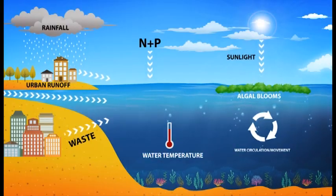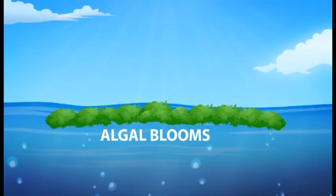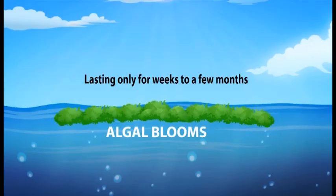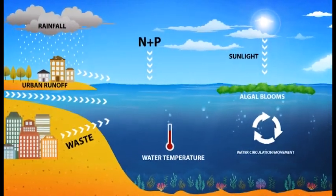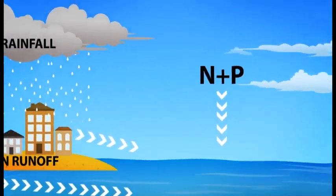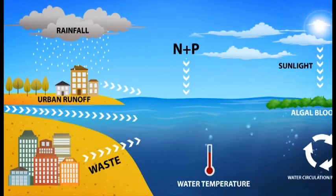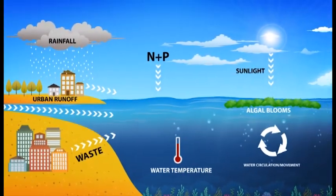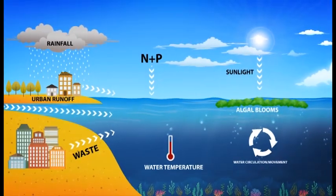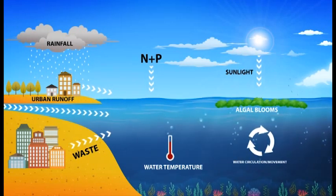What causes algal blooms? Algal blooms occur when there is a combination of environmental conditions favorable to sustain the growth and survival of algae. The recurrence is relatively short-lived, lasting only weeks to a few months in a particular area and is difficult to predict. One major requirement is the overabundance of nutrients — nitrogen and phosphorus in water. Nutrient-replete waters may come from rainfall, upwelling areas, urban runoffs, and wastewater outflows. When nutrients increase, the right combination of water temperature, sunlight, salinity, and water circulation and movement can trigger an algal bloom. Freshwater HABs are influenced by turbidity, whereas marine HABs are enhanced by tidal currents and climate-driven wind patterns.